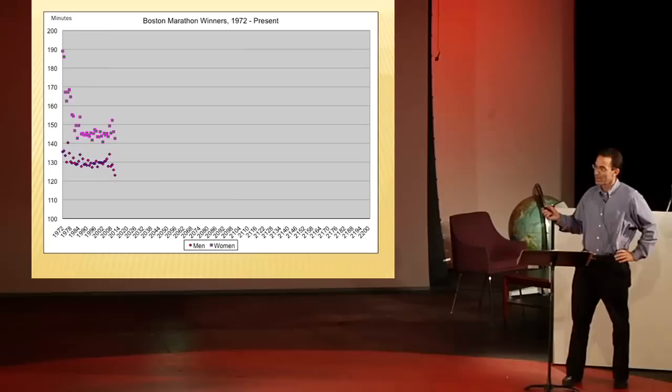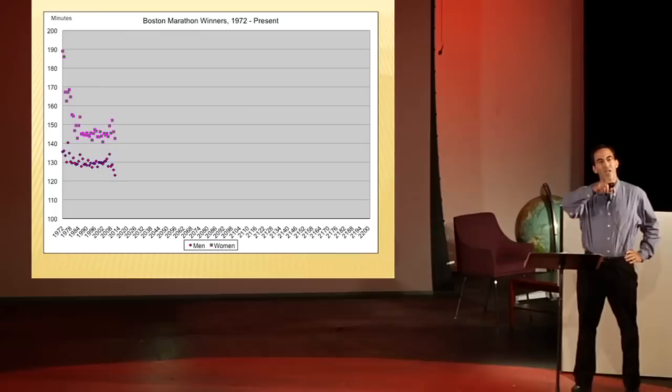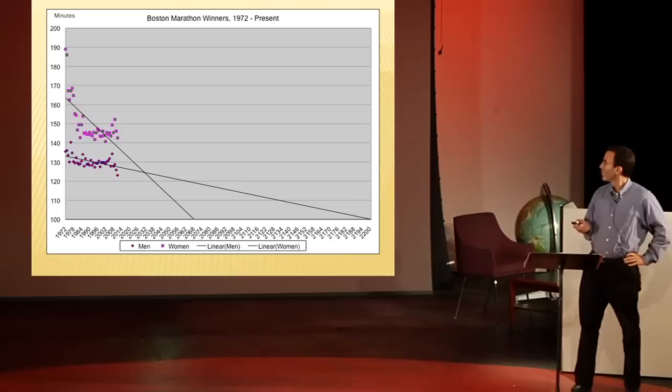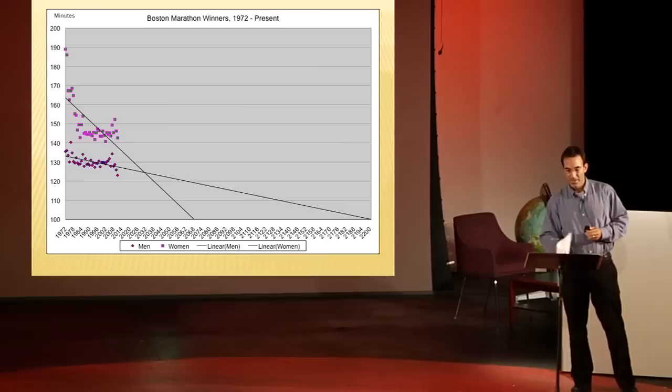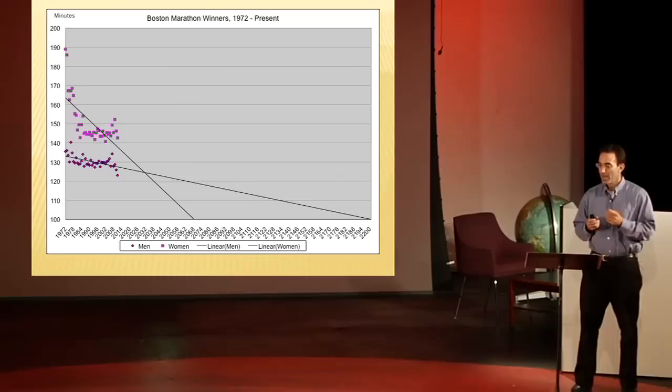And we want to look to the future, so we're going to scrunch that data up a little bit. Now we're going to add best fit lines, and a best fit line is a line that comes closest to the points. And there we have our best fit lines, and they cross around the year 2030. So statistics predicts that the fastest woman will beat the fastest man in the Boston Marathon.